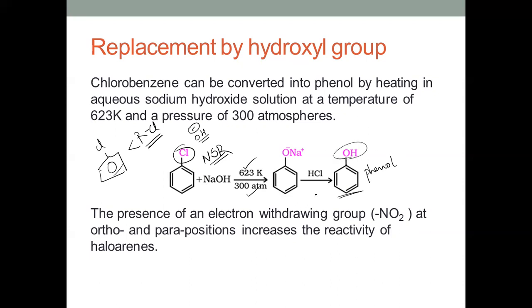But if we observe, the presence of a nitro group at ortho and para positions will increase the reactivity of haloarenes. That means if a nitro group is present at ortho or para, it increases reactivity — meaning less drastic conditions, that is less temperature and pressure, will be needed for the reaction to take place. Even at low temperatures and pressures, the reaction will occur. In other words, the presence of the nitro group — that is an electron withdrawing group — will increase the reactivity of haloarenes.